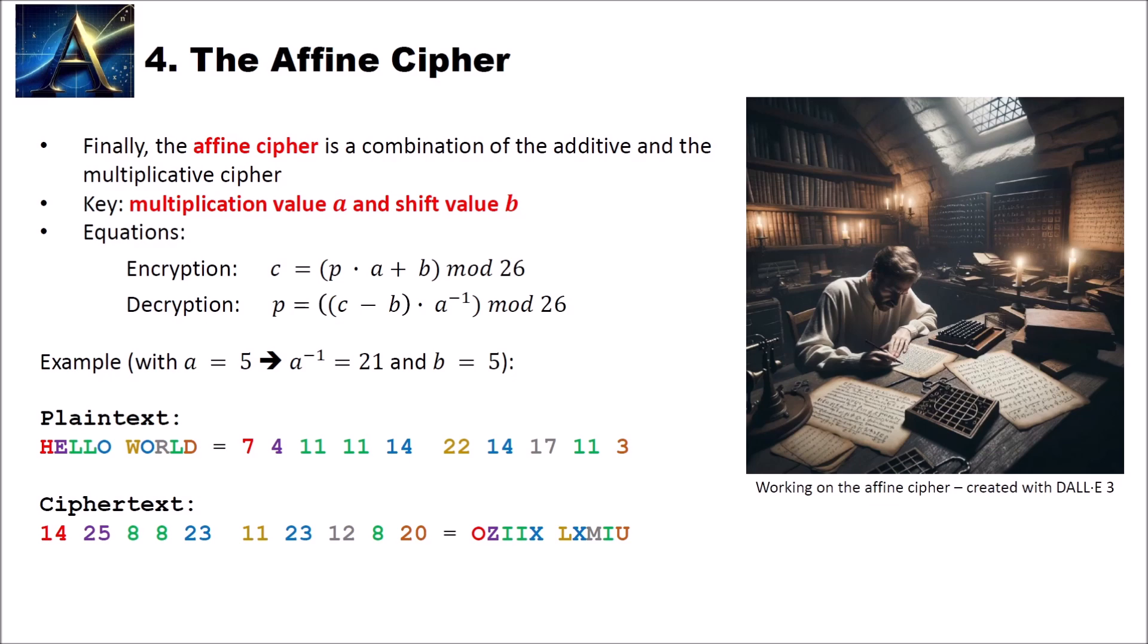Finally, we will have a look at the affine cipher. And the affine cipher is a combination of the shown additive and the shown multiplicative cipher. Now we have more or less two keys. The multiplication value a and the shift value b. These together are the key.